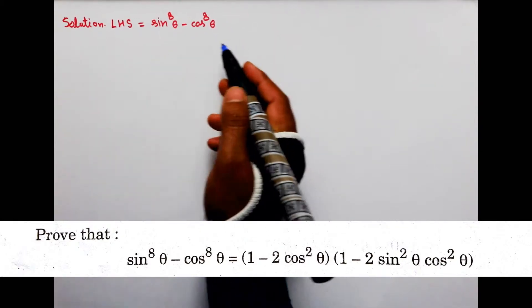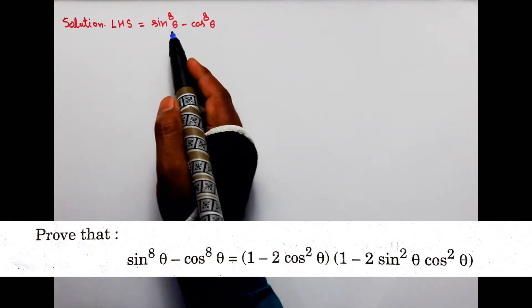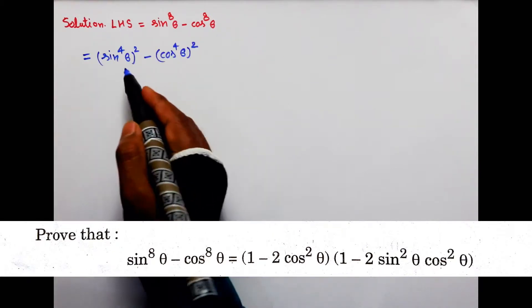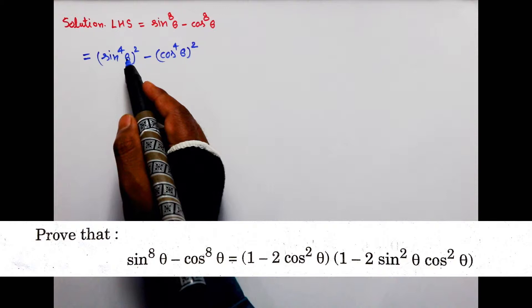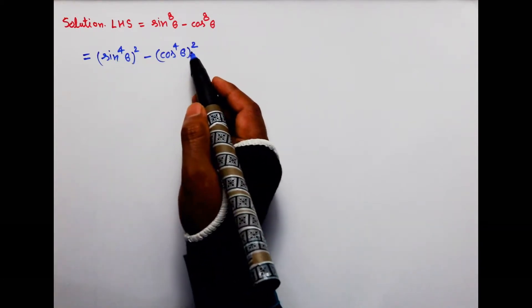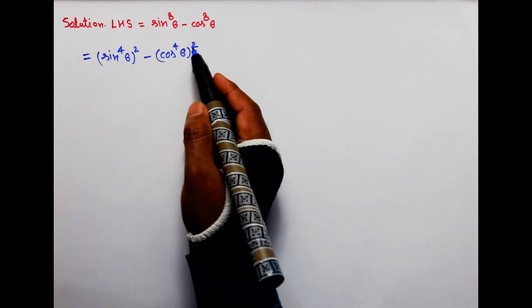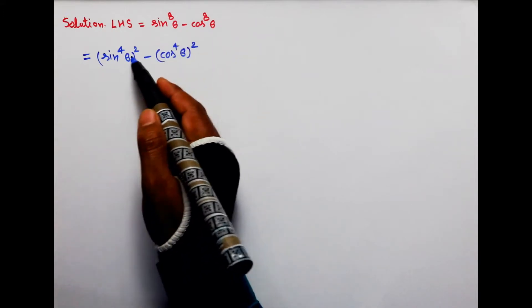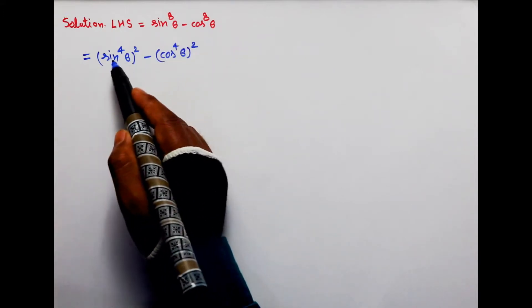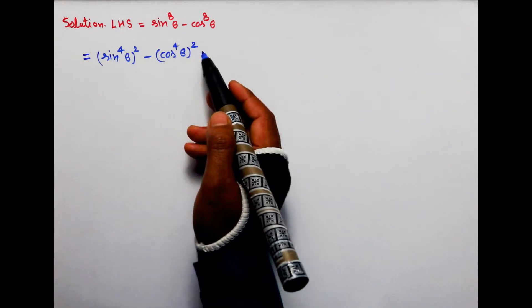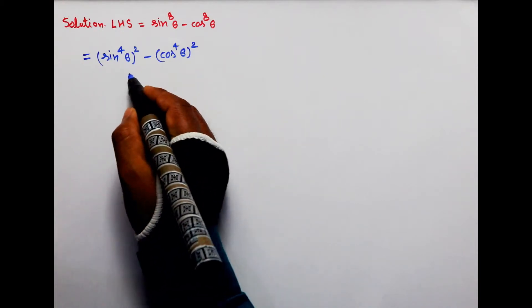Sabse pehle hum a square minus b square ki form banate hain. Toh ise aise likh paaunga: (sin theta to the power 4) whole power 2 minus (cos theta to the power 4) whole power 2. Bachyo, hum power 8 ko is prakar tod sakte hain — sin theta ke power 4 banao aur whole power 2 karo.